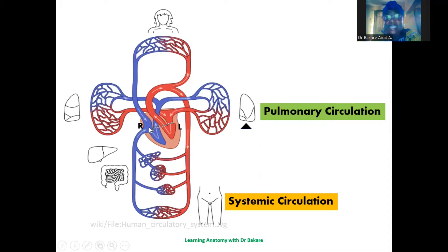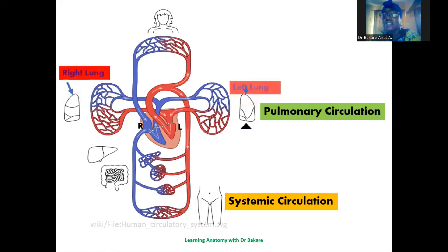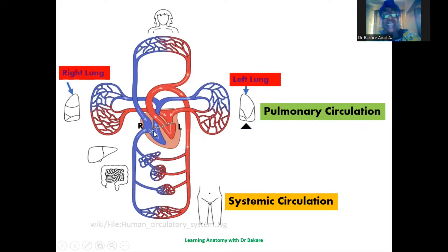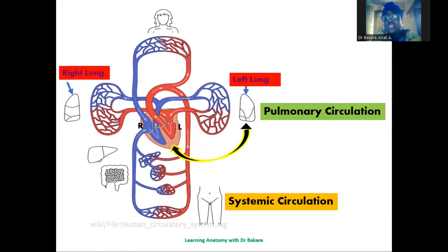The deoxygenated blood seen on the right side will be taken to the lungs, where it will be oxygenated. This is the right lung, and we have the left lung on the other side. Since we have deoxygenated blood on the right side, the heart pumps this blood out to the lungs where it will be oxygenated. The established circulatory pathway between the heart and the lungs during this process is called the pulmonary circulation.